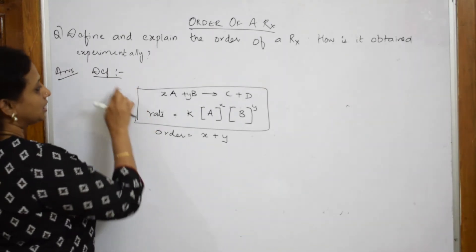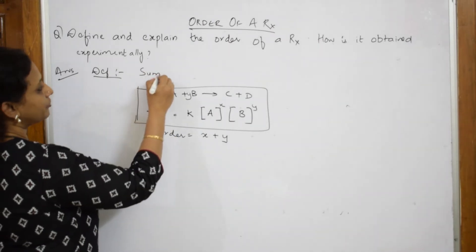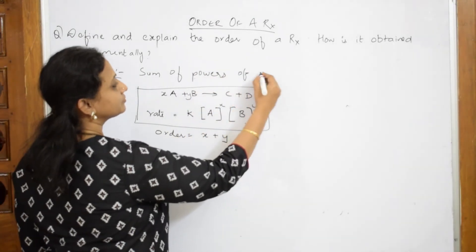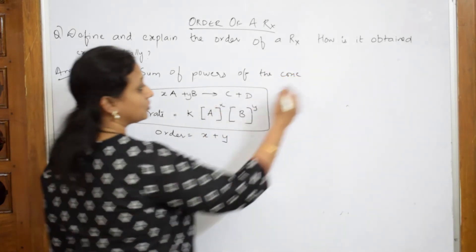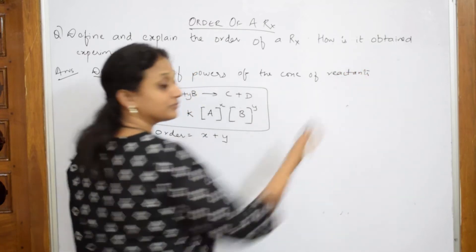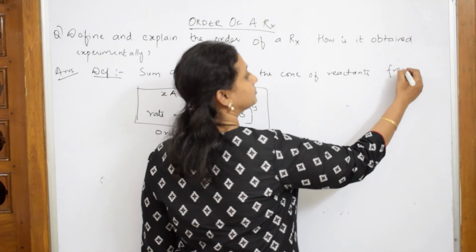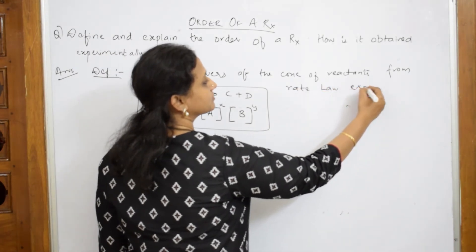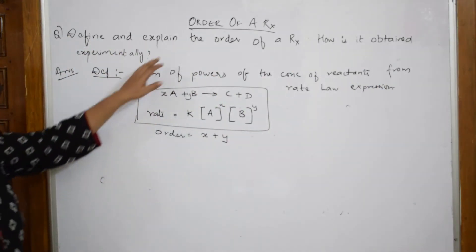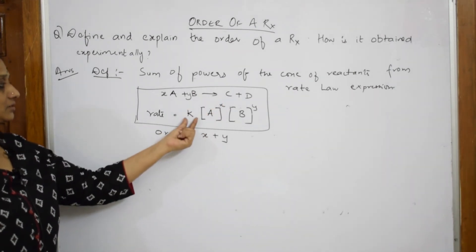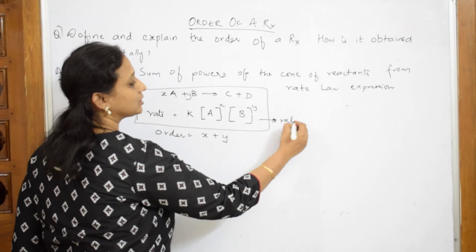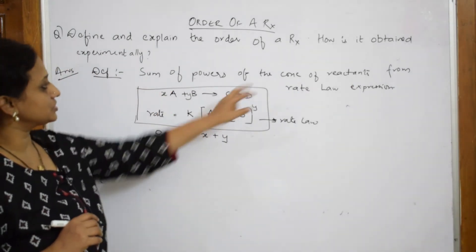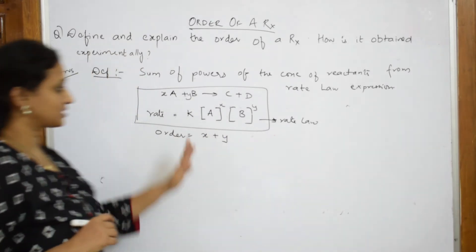Let me write the definition. Definition of order: it is the sum of powers of the concentration of the reactants — from which equation? From the rate law expression. That's it, simple. So I have written the reaction, then taken the rate of the reaction — that is called rate law — and to calculate the order, I add the powers X plus Y. So the definition is: sum of the powers of the concentration of the reactants from the rate law expression.